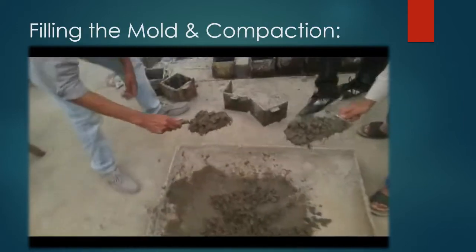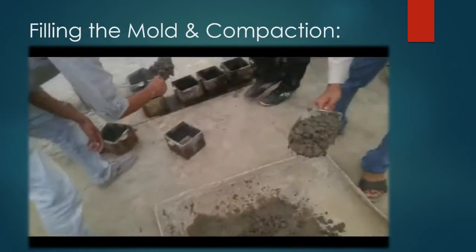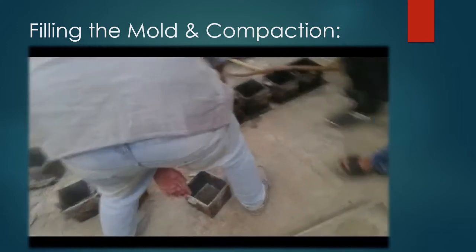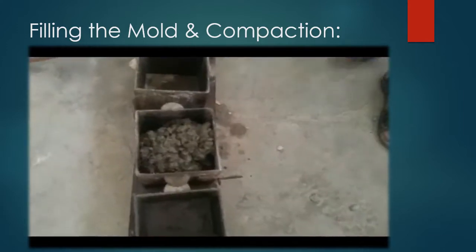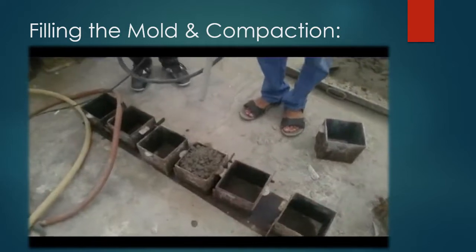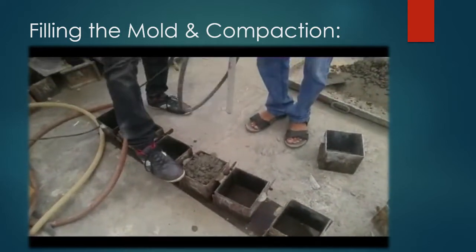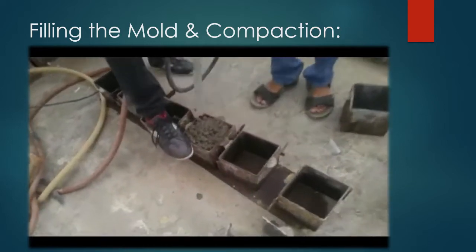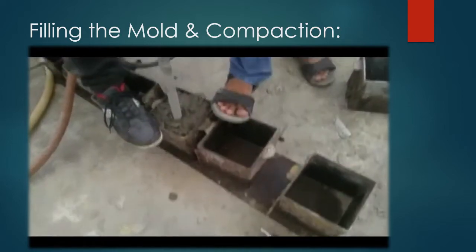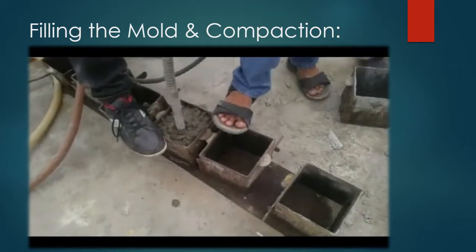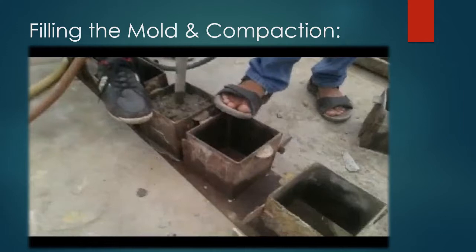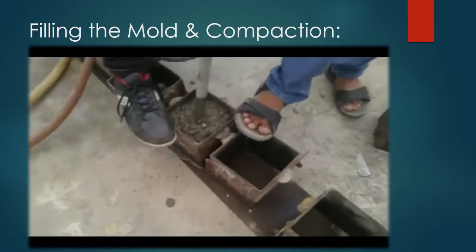After completing the wet mixing, we are filling the mold whose area is 6 by 6 inches and then compacting the FRC. In this video, we use a mechanical vibrator for compaction, but you can also use a tamping rod. The method for compaction using a tamping rod is slightly different.